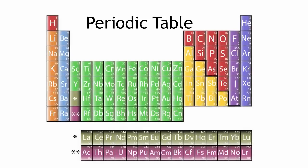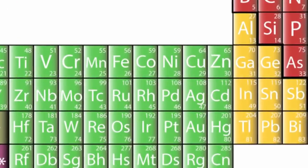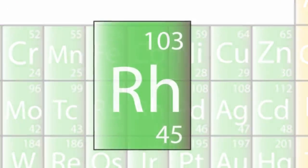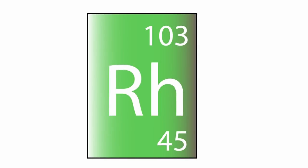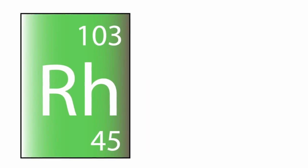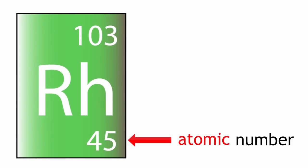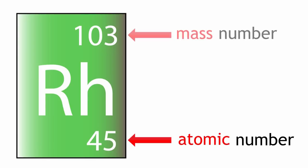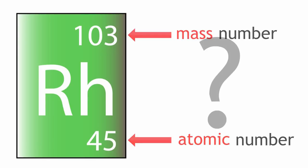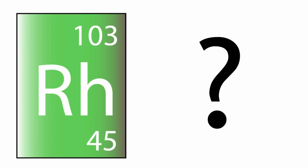When you look at the periodic table, you'll see that each element has its own box, and within that box you'll find two numbers: the atomic number, or proton number, and the mass number. But what do these numbers mean?